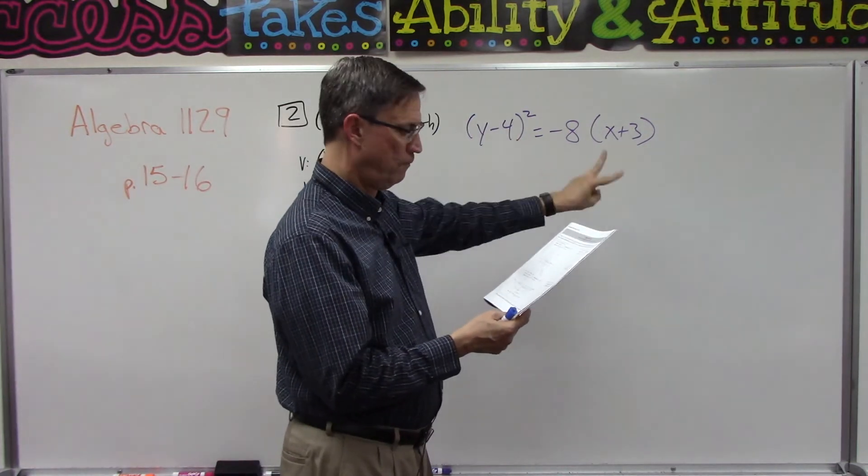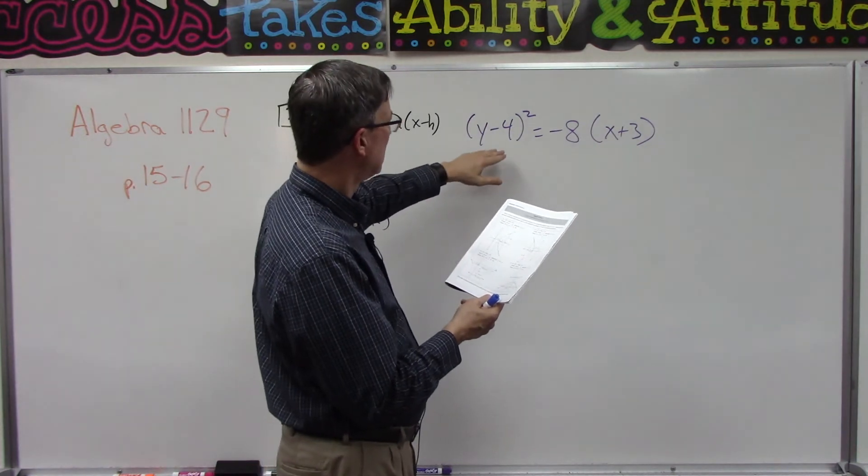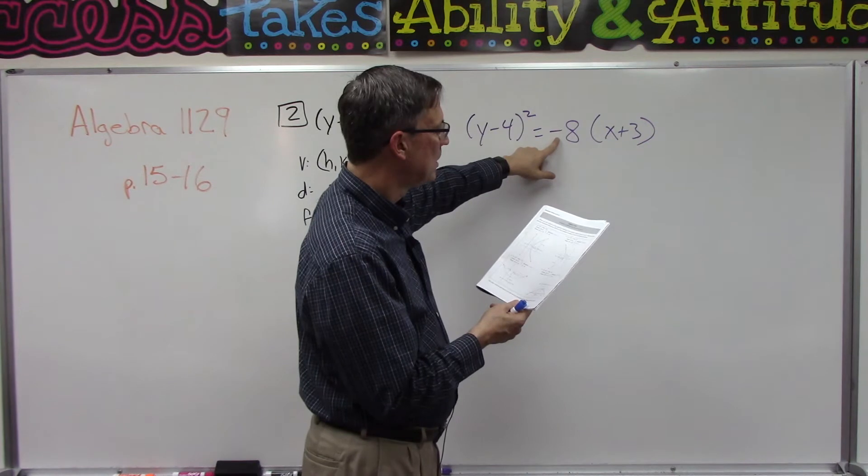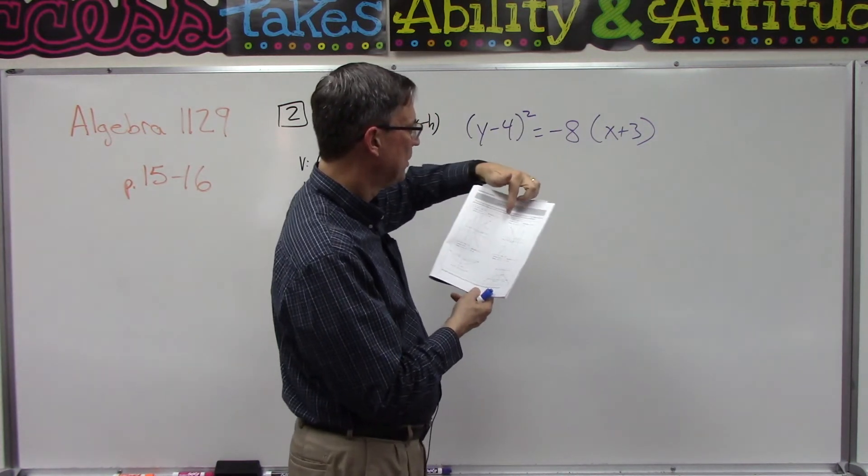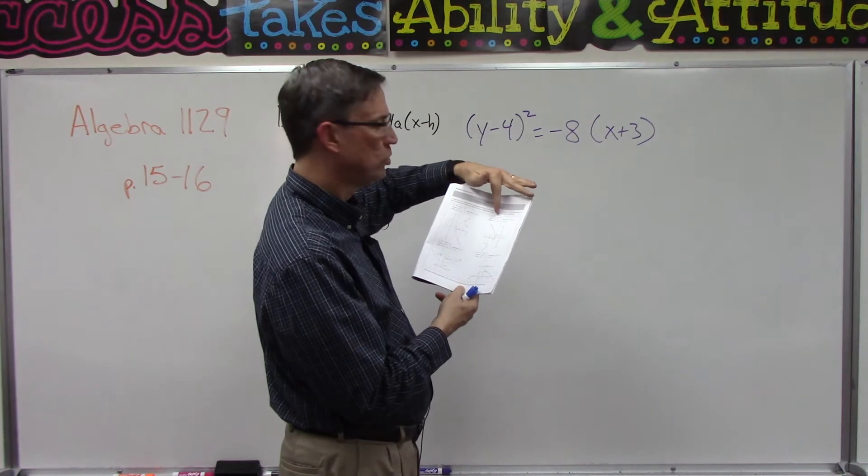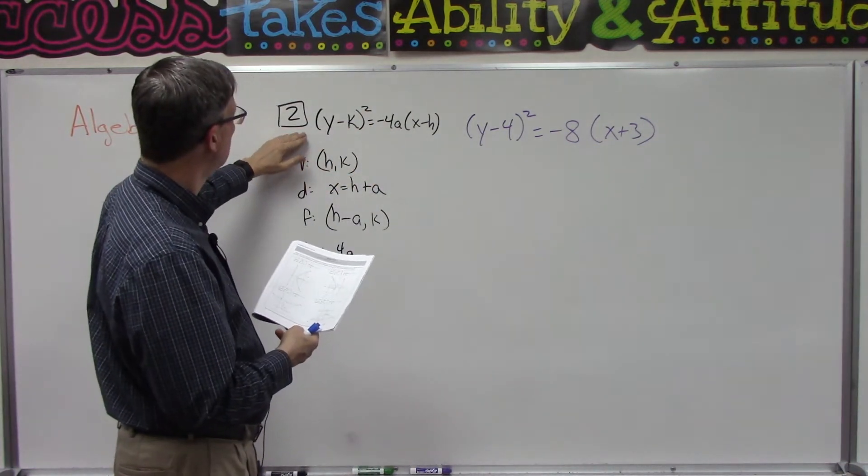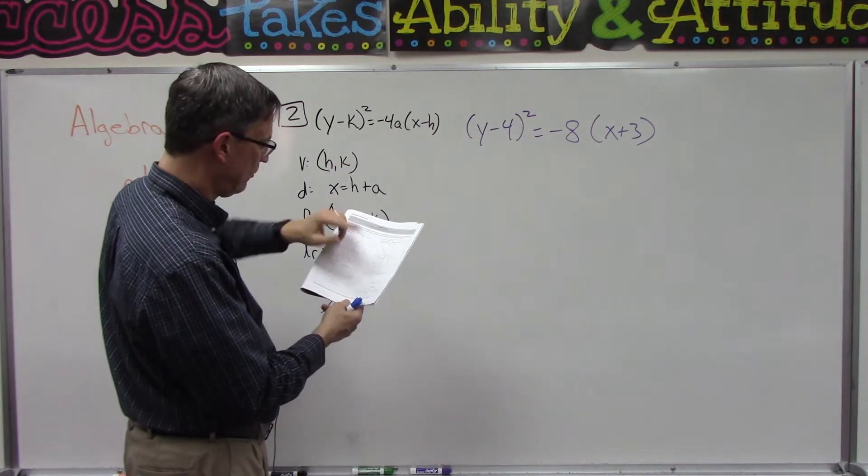But see how on number three and number four the x and the y are the opposite, so it's not going to be those two. And then looking at these, this one has a negative in front of the eight, so I'm thinking that is pattern number two here, okay? So that's why over here I wrote down pattern two.